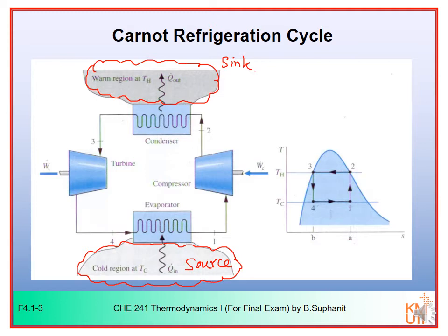With the reverse Carnot cycle, it will operate between two constant temperature reservoirs. In this cycle, the refrigerant is circulated through a series of equipment. You can see that all processes are internally reversible. We have two isothermal processes and two isentropic processes in the reverse Carnot cycle. The heat transfer between the refrigerant and each region occurs with no temperature difference, so the reverse Carnot cycle considered here would be totally reversible, with no external irreversibility due to heat transfer.